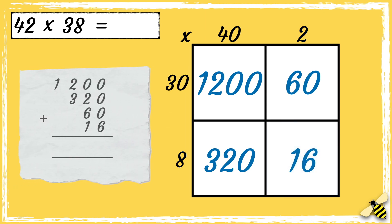Now that everything has been multiplied, we can add the numbers inside the box to get our answer. So first we have 6. Then 2 add 6 add 1 is 9. 2 add 3 is 5. And then we have 1000. So the answer is 1596.